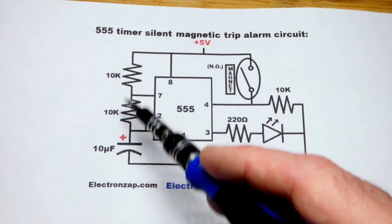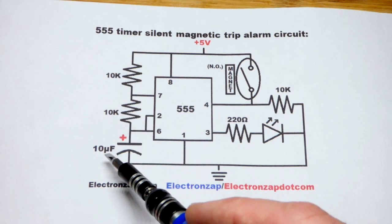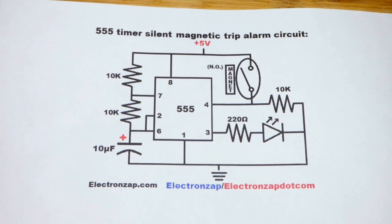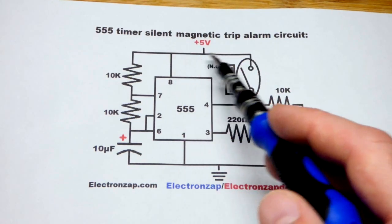So the timing part of the circuitry will have higher value components. We're going to use 10 kilo-ohm resistors for the timing and a 10 micro-farad capacitor. And we're going to use a red LED so it's silent, as I said before.